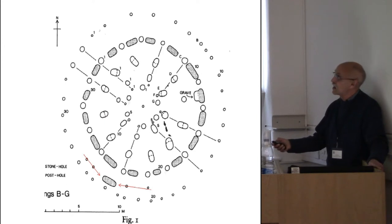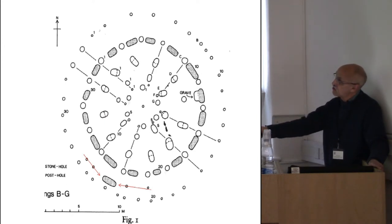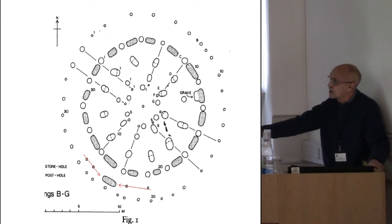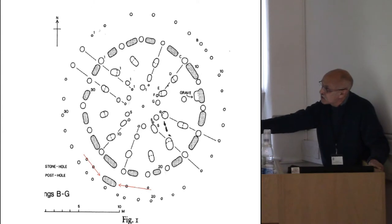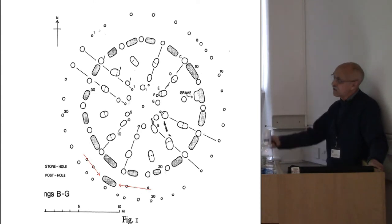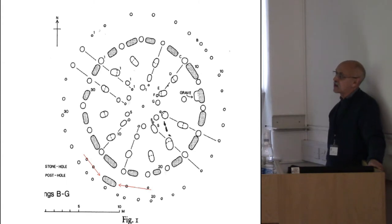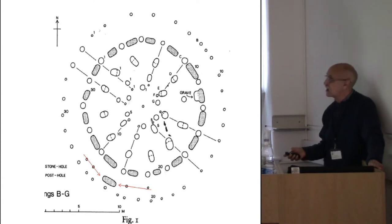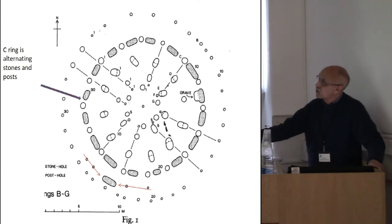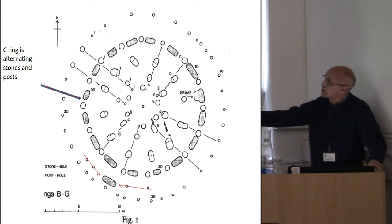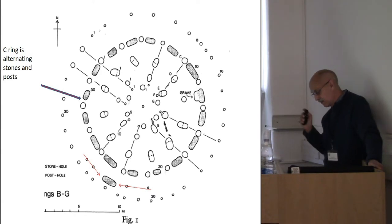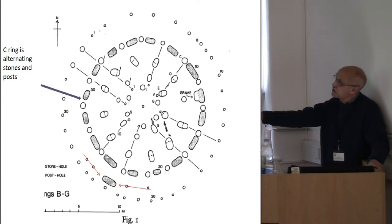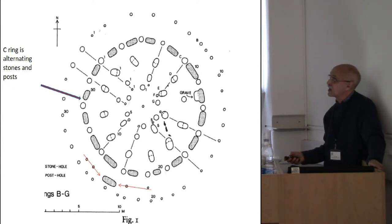Notice also that in the layout we have a cross-cardinal cruciform arrangement of corridors through the sanctuary. Stone H is associated either side with two posts, which again goes against the idea that stones and posts are separate over a four-phase history. The C-ring here is alternating stones and posts — and you wouldn't predict that there would be this even spacing without any cutting of the posts by subsequent later stones.